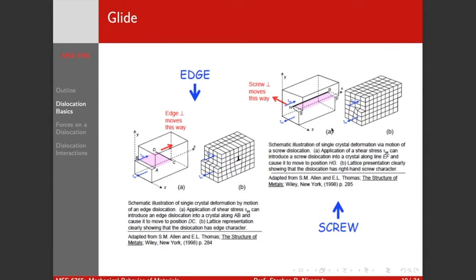Dislocation theory was originally developed to explain the incremental shear of crystallographic planes. That means we need to describe how these defects move and how this shear actually occurs. Starting with the edge dislocation: here's our extra half plane of atoms, so the dislocation line is running parallel to the z-axis, and our Burgers vector is along the x direction.